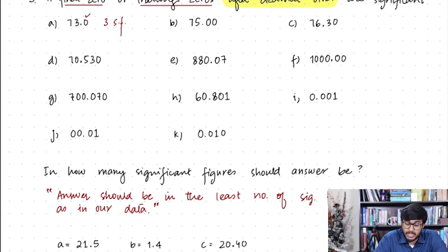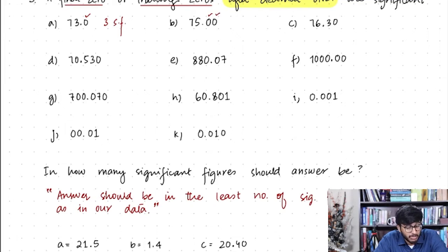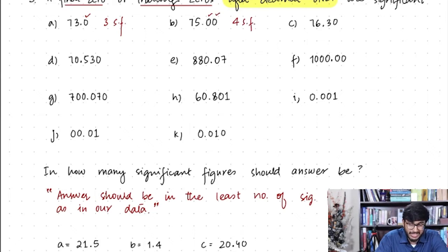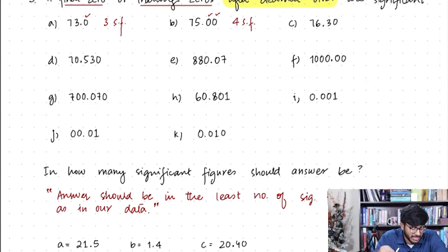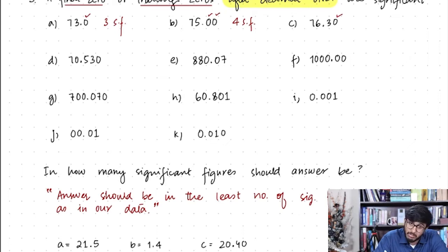For 75.00: both zeros are trailing zeros after a decimal place, so they are significant. That gives four significant figures — 7 and 5 are already significant, and these two zeros are also significant trailing zeros after a decimal place. For 76.30: again a trailing zero, significant — four significant figures.